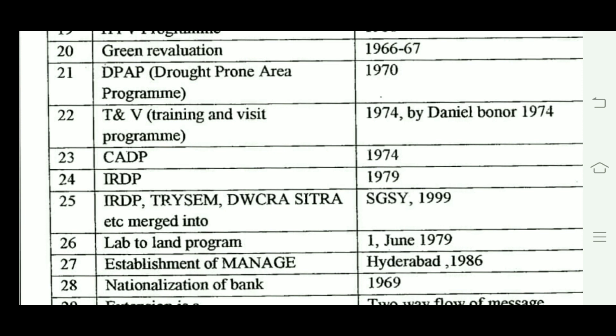SGSY — Swarna Jayanti Gram Swarozgar Yojana — was introduced in 1999. The main benefit of SGSY is providing support to the Swarozgari (self-employment) centers.